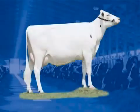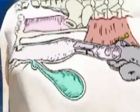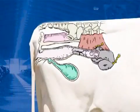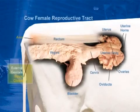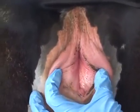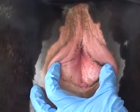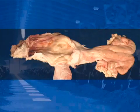Reproductive anatomy of the cow. In order to understand the proper insemination technique, it is very important to know the female reproductive tract. External genitals: vulva, clitoris, and vestibular glands. Vagina: it is a cavity of strong muscular tissue that